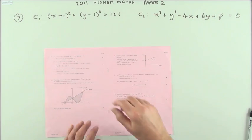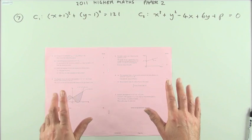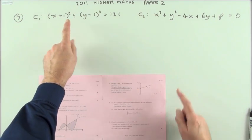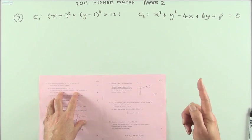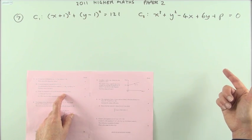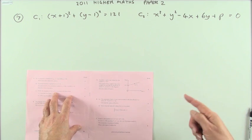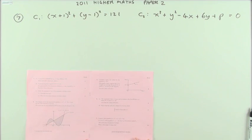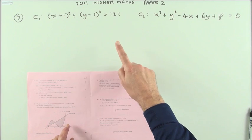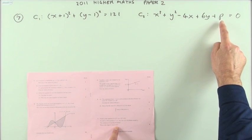Number seven, the last question from the 2011 Higher paper: two circles. There's nothing to be scared of with circles. The first thing you have to do is extract the geometrical information about the circle — where's its center, what's its radius. You've got two circles, one meant to be inside the other but not allowed to touch, and you have to find the possible values of p for that to happen.